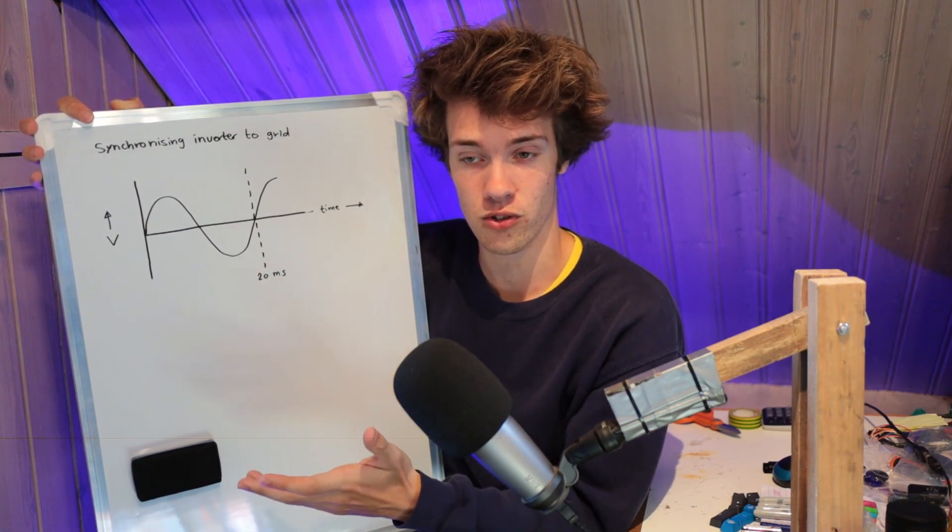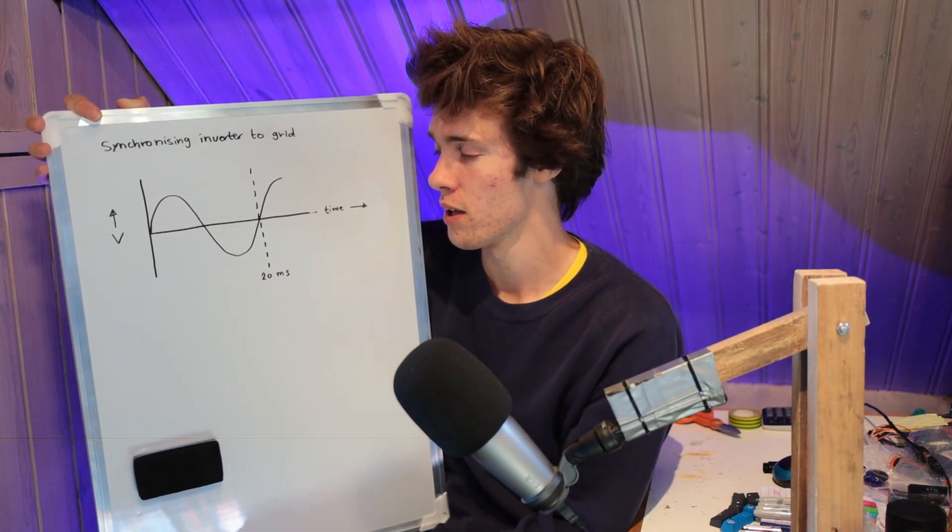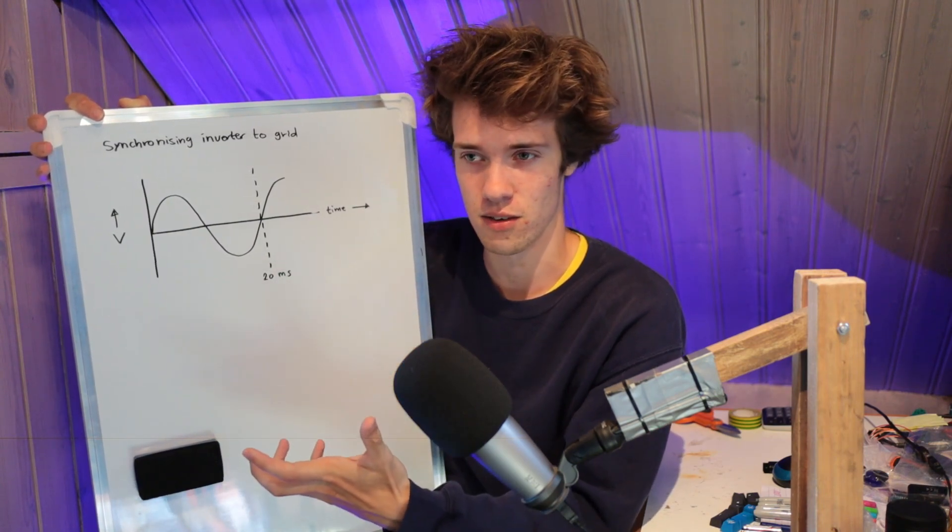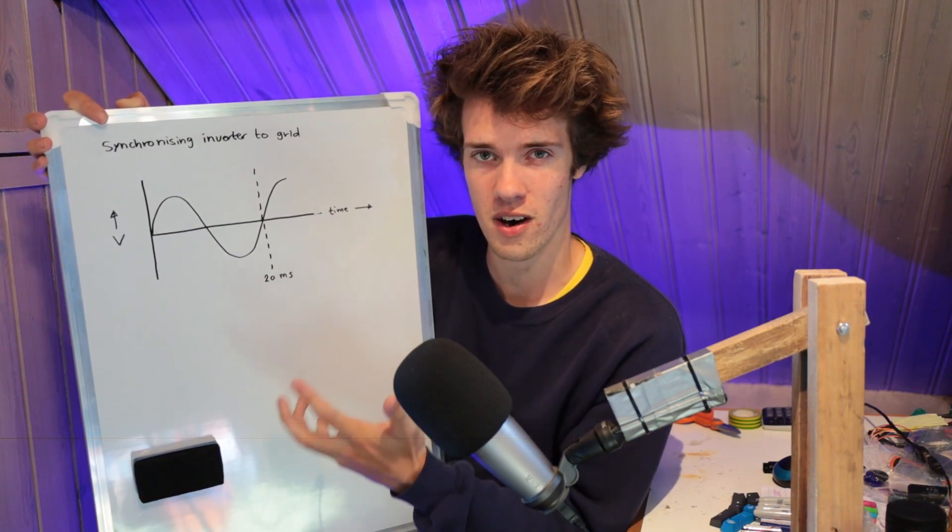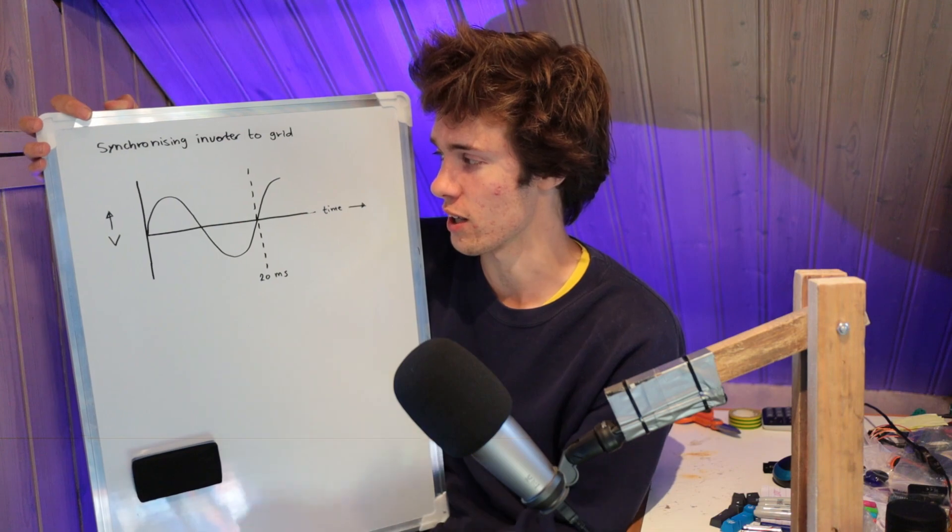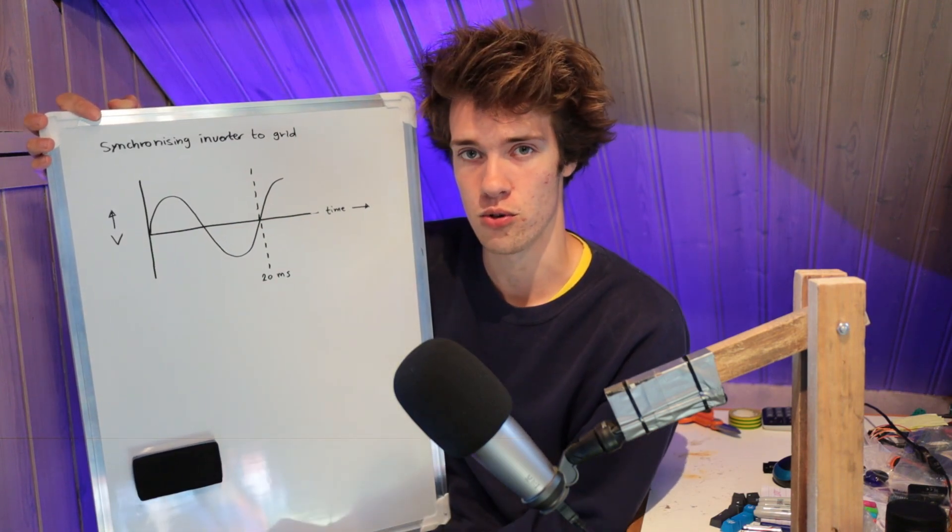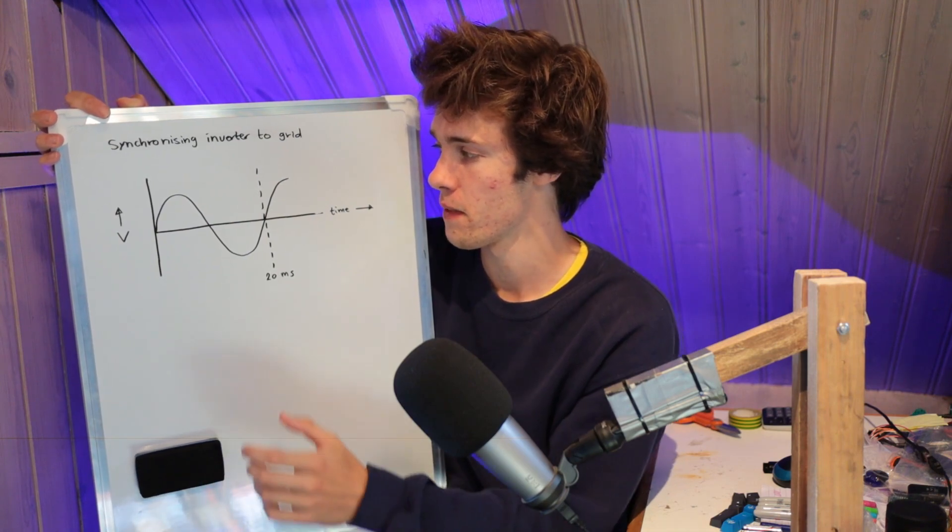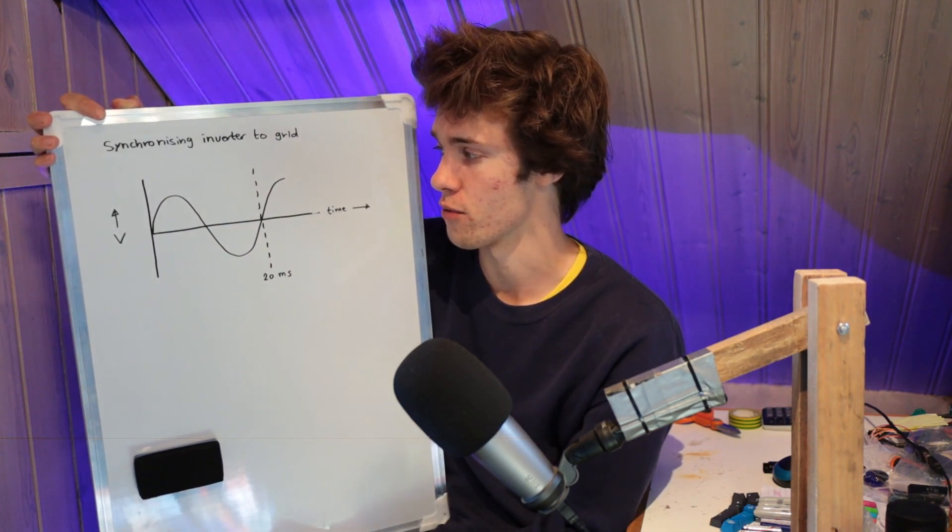Now, the output from an inverter might be very similar, if not exactly the same. So then why can't I just connect the inverter directly to this power grid? Well, it all has to do with timing, or phase, as we like to call that. Even though the inverter might produce the same type of waveform, how do we know that it has the same timing as the one from the grid?